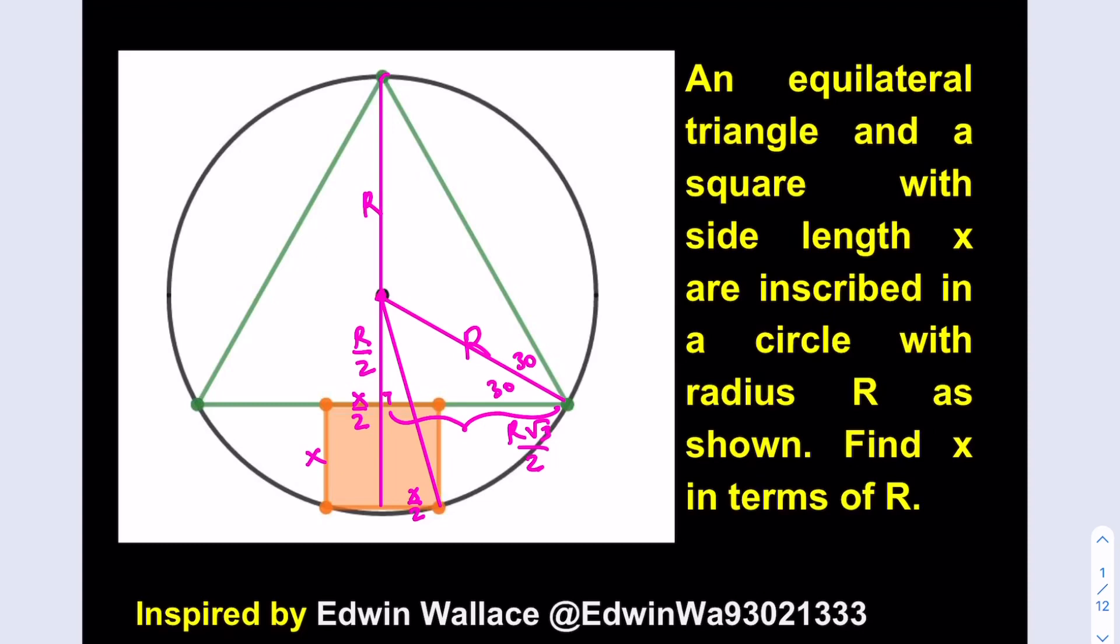This is a midpoint which is a median, so if you double this length r root 3 over 2 you get r root 3 which is the side length for the equilateral. Now why do we need that? Because we're going to use the Pythagorean theorem here and that's going to be helpful.